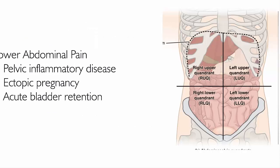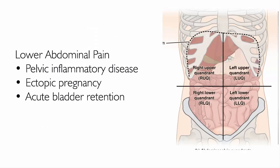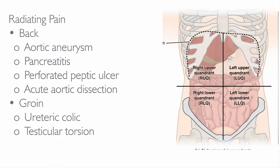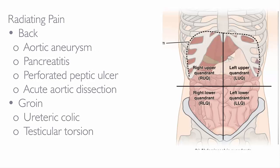Lower abdominal pain can be caused by pelvic inflammatory disease, ectopic pregnancy, or acute bladder retention. Radiating pain toward the back may suggest aortic aneurysm, pancreatitis, perforated peptic ulcer, or acute aortic dissection. If radiating towards the groin, consider ureteric colic or testicular torsion in males.